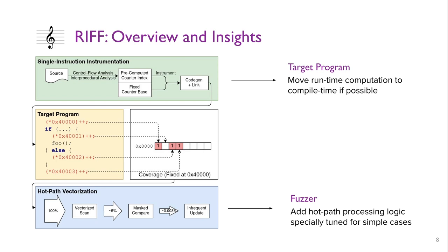Second, to accelerate coverage analysis logic in fuzzers, we add a hot path which handles the most common cases. The simplified logic on hot path allows hardware-assisted acceleration, and it only falls back to the slow path on 0.003% of cases in general.